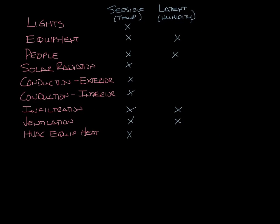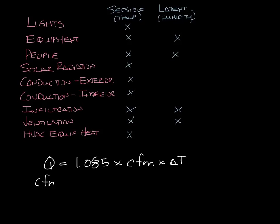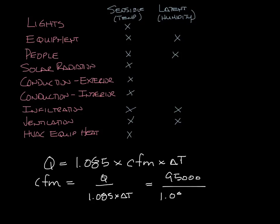In the last podcast, I talked about the load equation: Q equals 1.085 times CFM times delta T. So you can calculate how much airflow you need once you know the loads Q. CFM equals Q divided by 1.085 times delta T. So let's say we've got a total load in a building of 95,000 BTU. You're supplying 55-degree air and you want your space to be 75 degrees, so that's a 20-degree delta T. When you do the math, that comes out to 4,377 CFM — so you need about 4,400 CFM to handle the load of this space.